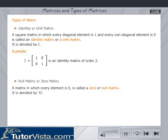Null matrix or zero matrix: A matrix in which every element is 0 is called a zero or null matrix. It is denoted by O.